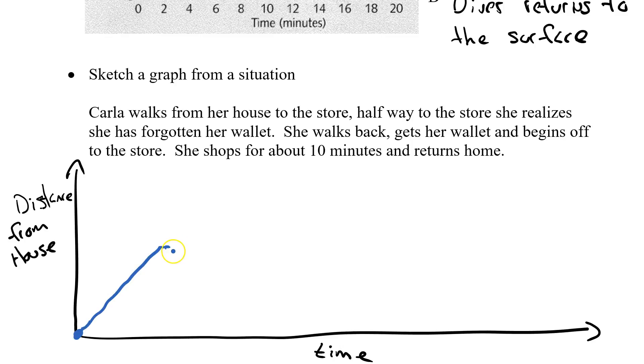She's then going to walk back to her house. Now if you're like me, if I forgot my wallet, I tend to walk back a little bit quicker. So I may make this a little steeper than the actual walk. Now she gets home. Now she has to look for her wallet. So there is going to be some time that passes. So there's some time that passes while she gets her wallet. She finds it. Maybe it fell behind her kitchen chair. And she goes back to the store.